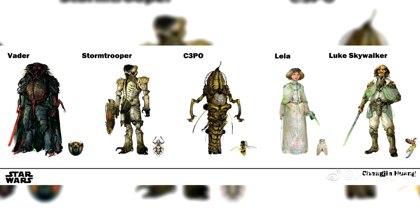The first set totally reminds me of the Yuuzhan Vong from Star Wars Legends — a powerful insectoid-like alien race that were totally invulnerable to the Force. Very cool, and possibly the most outside-the-box thinking from anyone given this assignment.